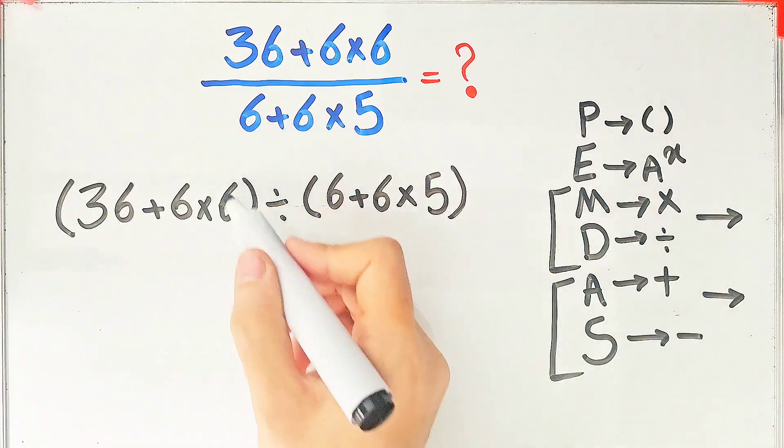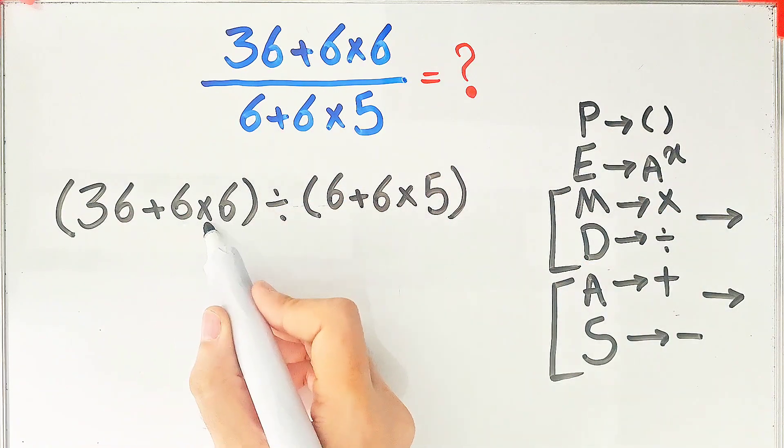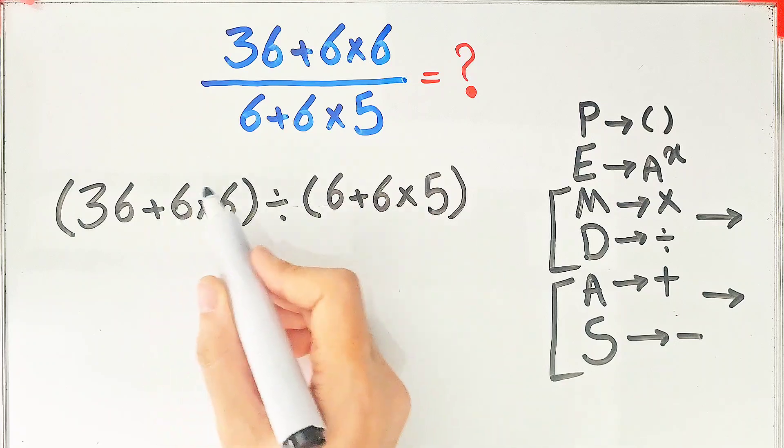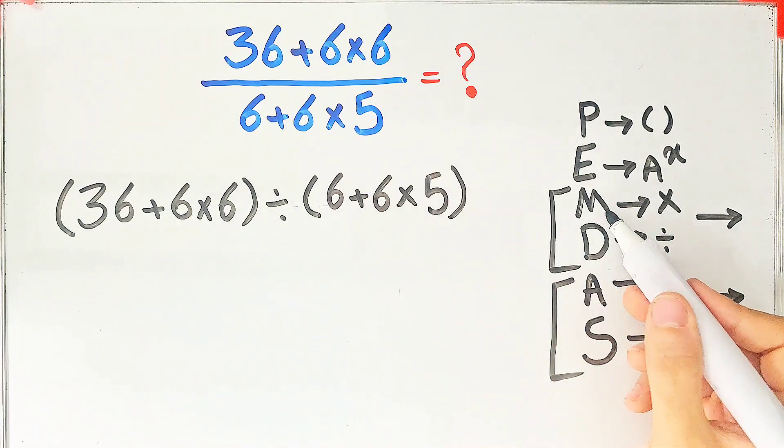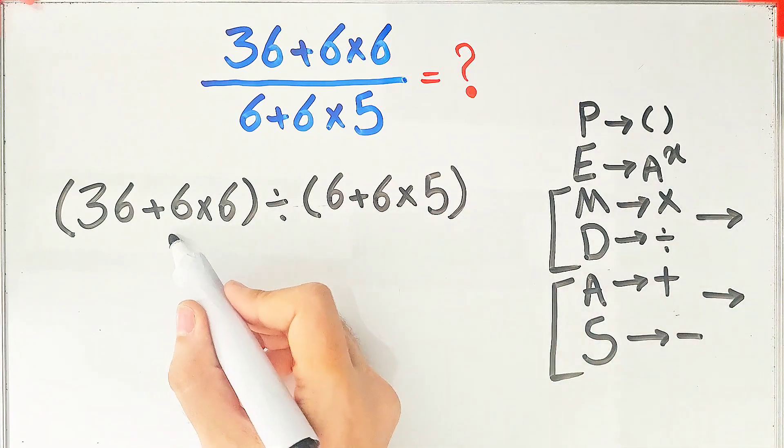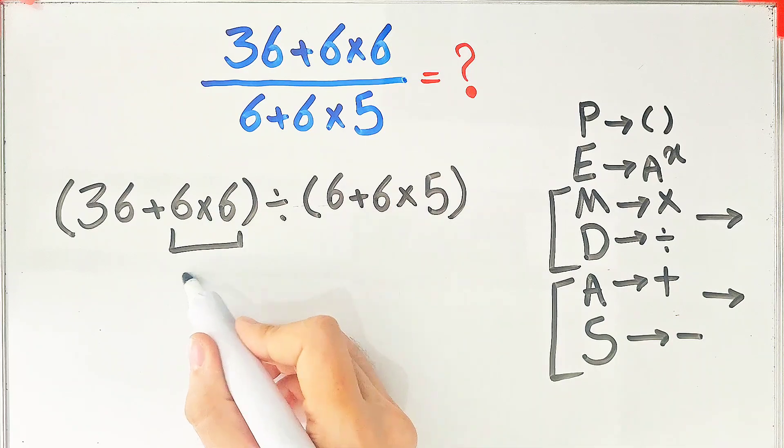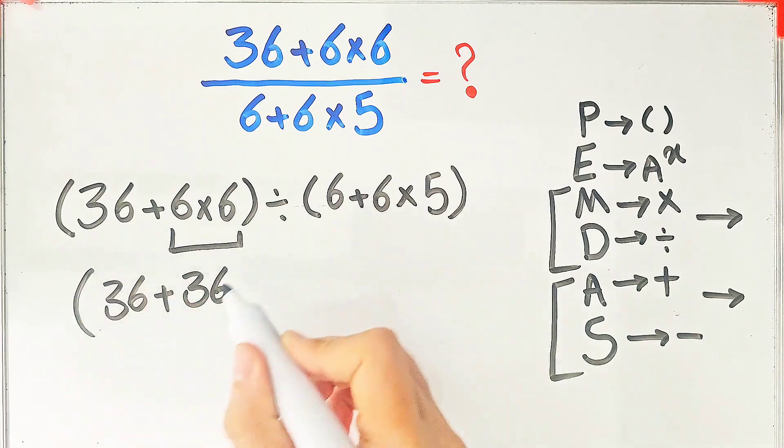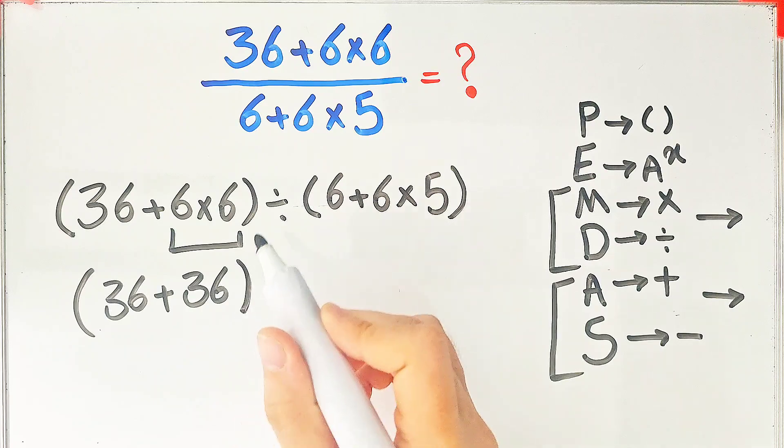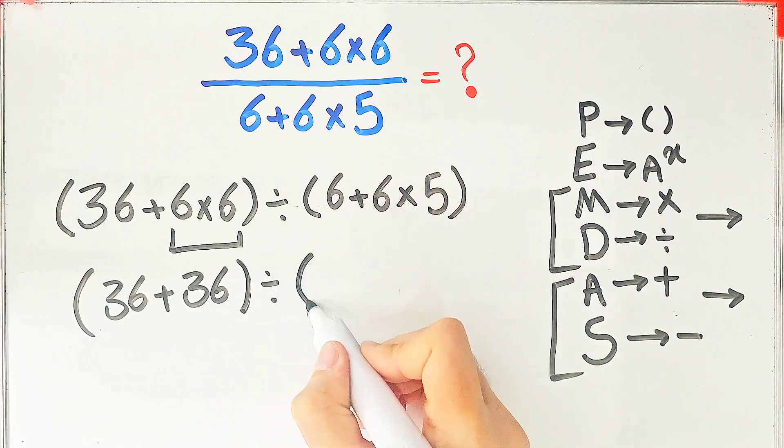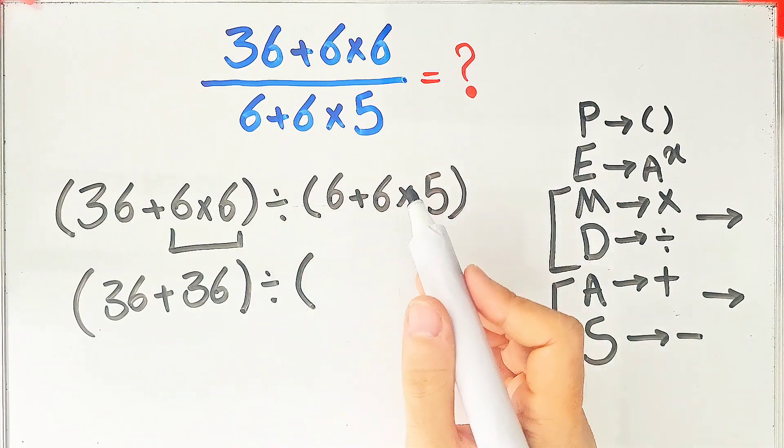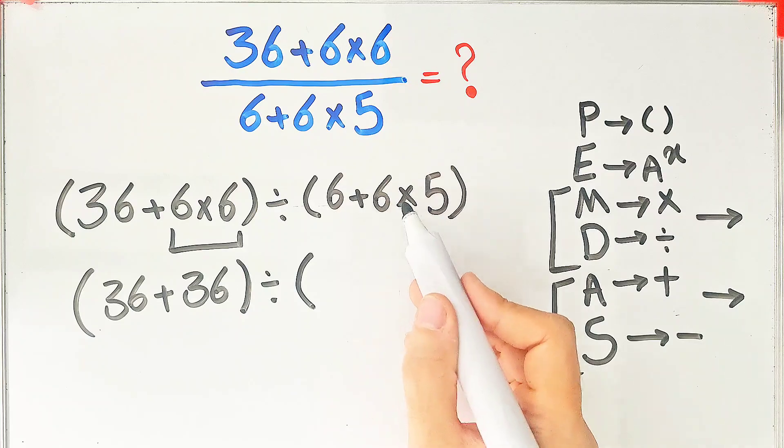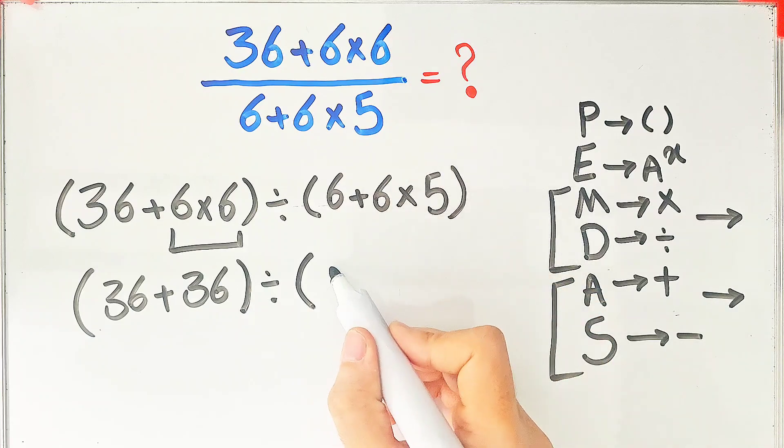According to the PEMDAS rule, first we simplify the parentheses. Inside the first parentheses, we have addition and multiplication. First, we do this multiplication because the multiplication has higher priority than addition. 6 times 6 equals 36. We have 36 plus 36 in the first parentheses. And in the second parentheses, first we do this multiplication. We have 6 plus 6 times 5, which equals 30.